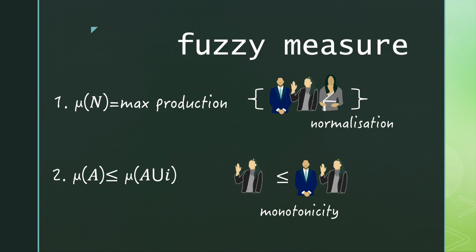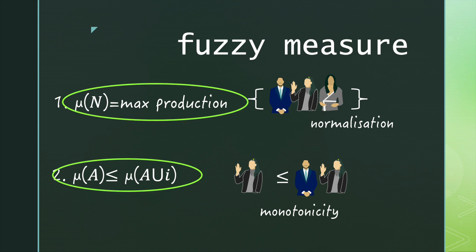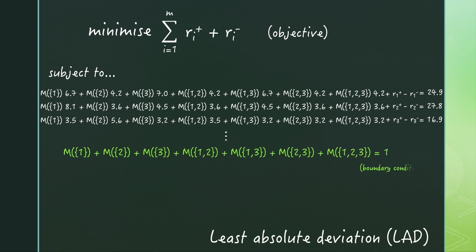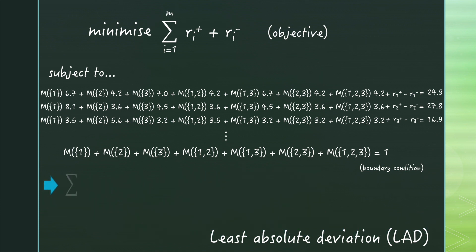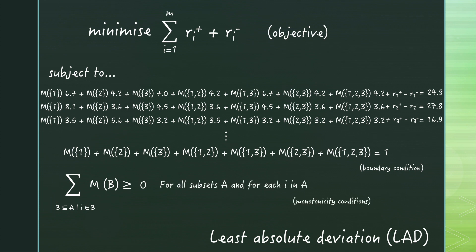The last thing we need is to ensure that the fuzzy measure satisfies its monotonicity and boundary properties. The boundary property is ensured in Möbius representation by setting the sum of all the Möbius values to one. For the monotonicity constraints, we need to ensure that for any given subset, taking out any single input doesn't increase the weight. This requires K constraints for each subset of size K, and altogether there will be two-to-the-N subsets. So the number of constraints required can also become an issue.